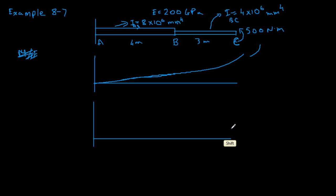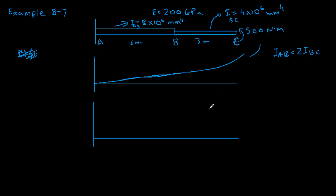Another consideration is that we have two beams with different I values. Beam AB has an I value that is twice the value of BC, so IAB is equal to 2 times IBC.